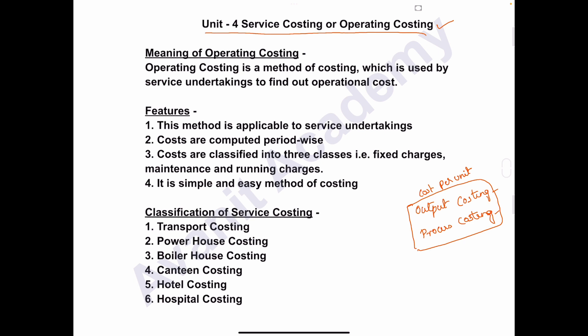Now, the meaning of operating costing: Operating costing is a method of costing which is used by service undertakings to find out operational cost or cost per unit. This method is adopted by industries engaged in rendering services to consumers.